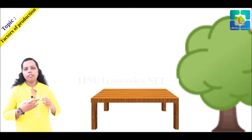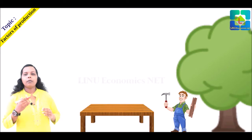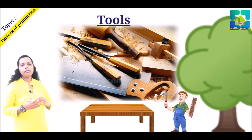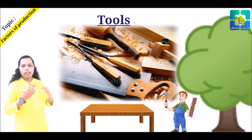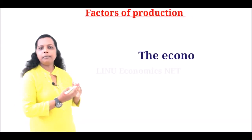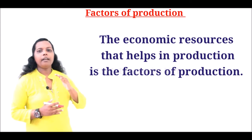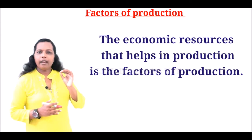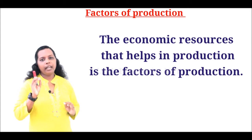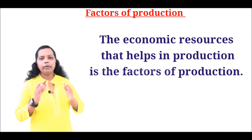How does this wood get changed to a wooden table? Labors are needed to produce this wooden table. Moreover, machineries are needed. So here, to produce the wooden table, we use wood, labors, machineries, etc. Anything that helps to produce goods and services, we can call factors of production. They are the resources, or the inputs, to produce goods and services. In economics, factors of production refers to the resources that we are using to produce goods and services.